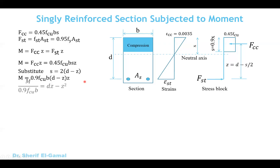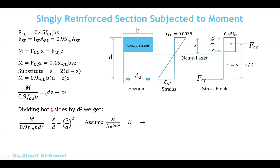Rearranging the equation, we take 0.9 Fccu times b to the denominator, so m over 0.9 Fccu times b equals d times z minus z squared. Dividing both sides by d squared, we get m over 0.9 Fccu b equals z over d minus (z over d) squared. We define k as m over Fccu times b d squared, so substituting gives k over 0.9 equals z over d minus (z over d) squared.